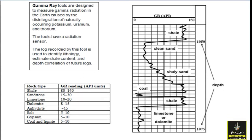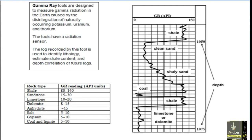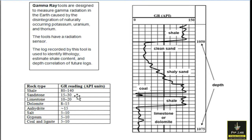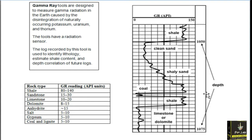Let me explain the gamma ray. Gamma ray tools are designed to measure gamma radiation in the earth caused by disintegration of naturally occurring potassium, uranium, and thorium. These tools have a radiation sensor. The log is used to identify lithology, estimate shale content, and for depth correlation. The scale shows: shale ranges from 80 to 140, sandstone from 15 to 30, limestone from 10 to 20, and dolomite from 8 to 15 API units. This graph shows which rock lithology is available inside the hole.